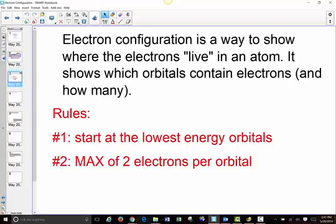Electron configuration is a way to show where the electrons live in an atom. It's a description of the electrons. It shows which orbitals contain electrons for that atom and how many electrons are in each orbital. There are two rules when we start writing out electron configuration. The first rule is that we start at the lowest energy orbitals and work our way up. We don't randomly assign electrons to an orbital. We start at the very bottom with the 1s orbital and fill them as we go until we've reached the number of electrons that atom has. The second rule is that each orbital can have a maximum of 2 electrons.